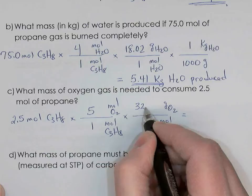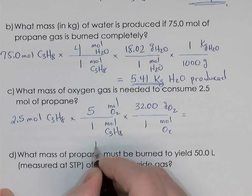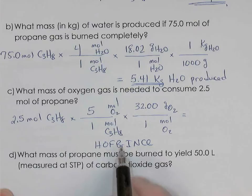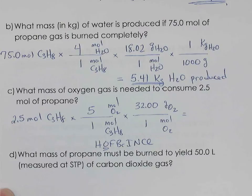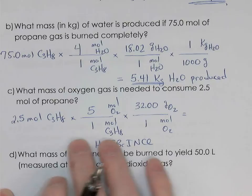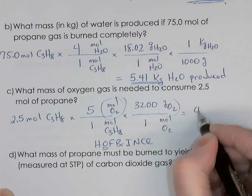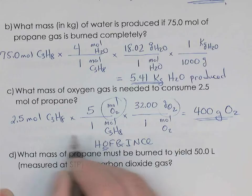Oxygen is one of the diatomic elements — H, O, F, Br, I, N, Cl — they form molecules of two atoms. So oxygen is O2, molar mass 32.00 g/mol. Calculating: 2.5 × 5 × 32 = 400 grams. The answer is 4.0 × 10² grams of oxygen are consumed.